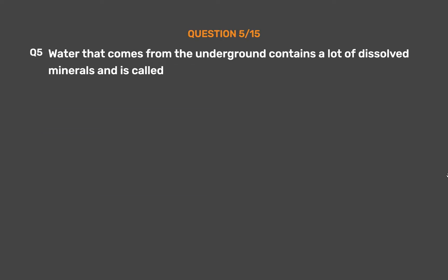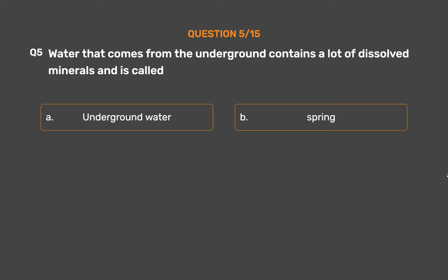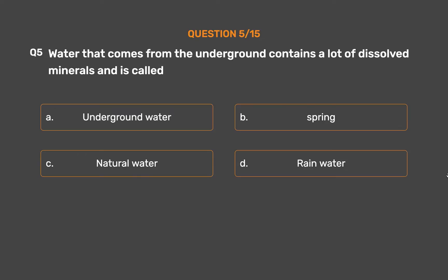Question number five: Water that comes from underground contains a lot of dissolved minerals and is called — option A: underground water, option B: spring, option C: natural water, option D: rainwater.